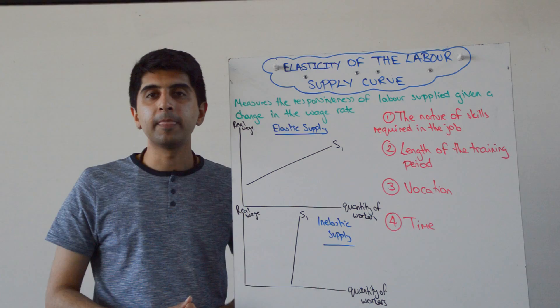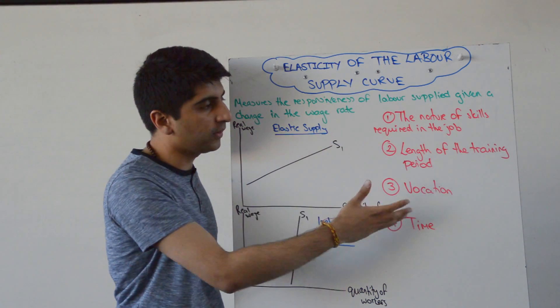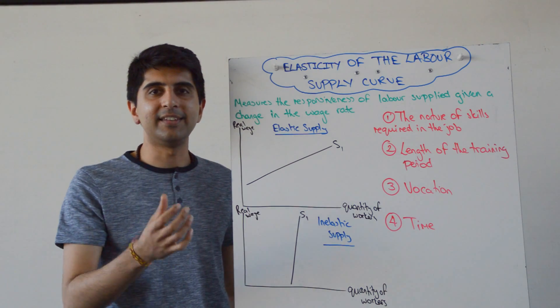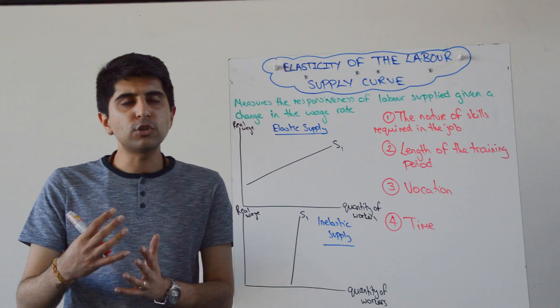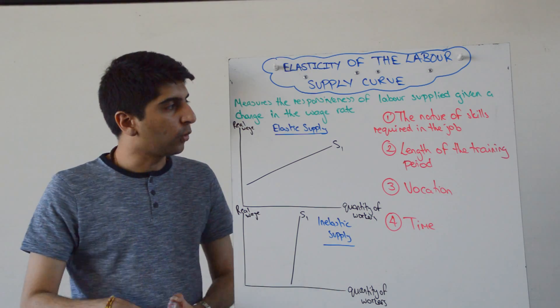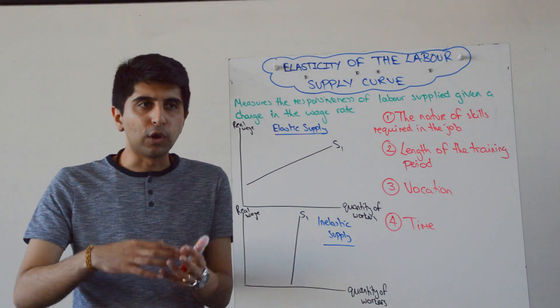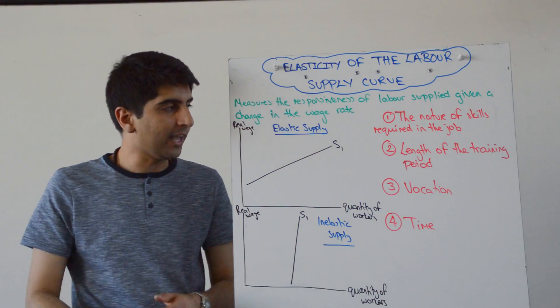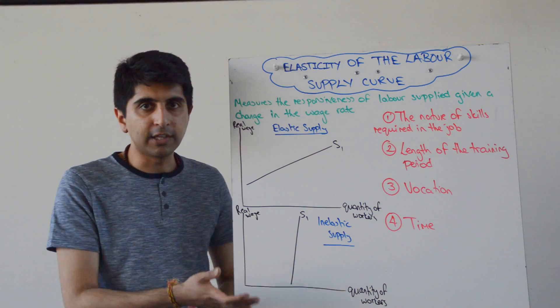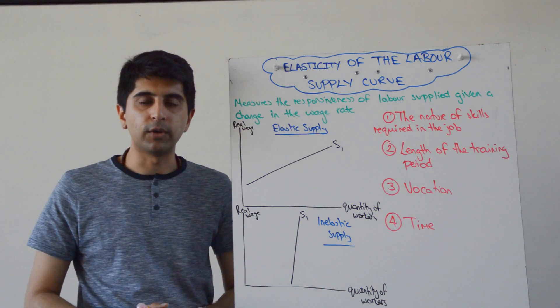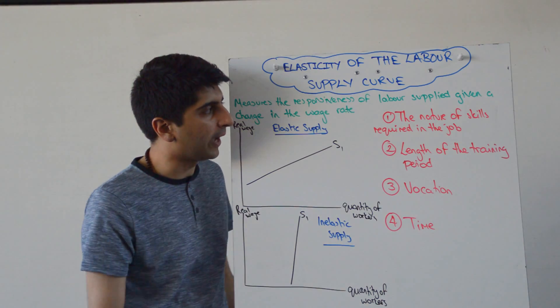Alright, so what are the factors, what are the determinants of elasticity of labor supply? Well, there are four key ones you need to know. In your head, you're thinking if the wage rate changes, will there be a sudden flock of workers into the profession? So the wage rate goes up, will lots of workers enter? If the answer is yes, we have elastic supply. Or if the wage rate increases, will there not be much of an increase in the supply of workers? If that's the case, why is that happening? There are four reasons why.